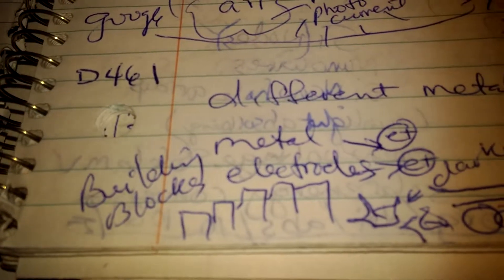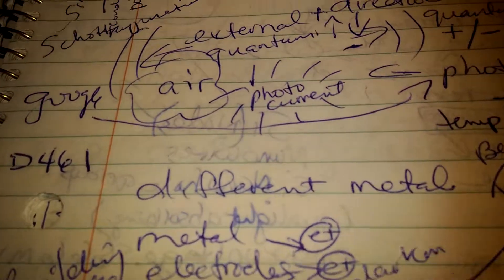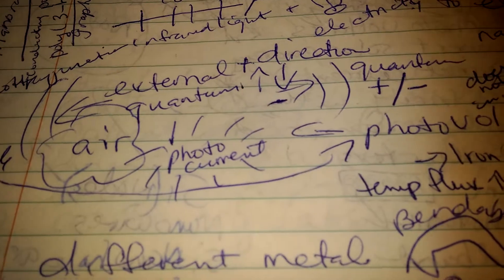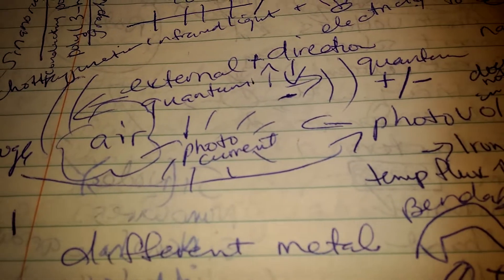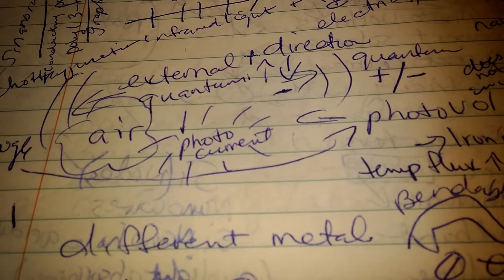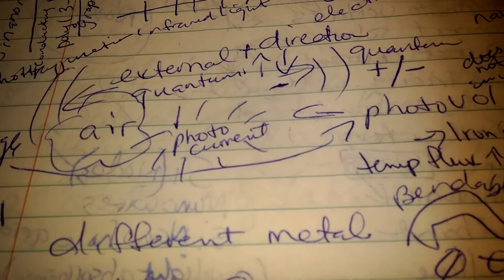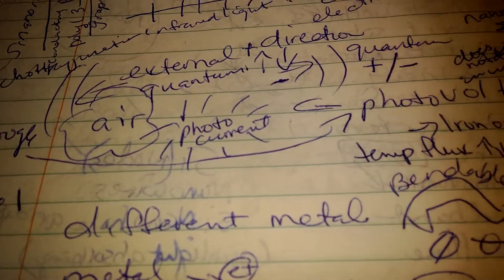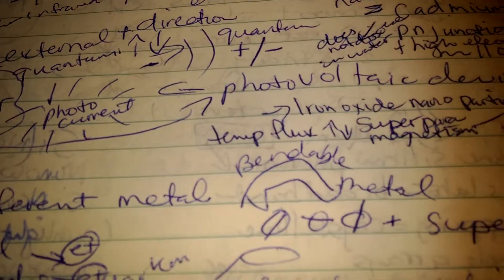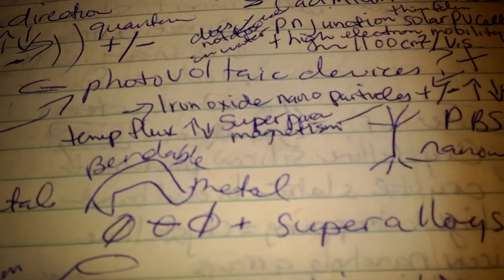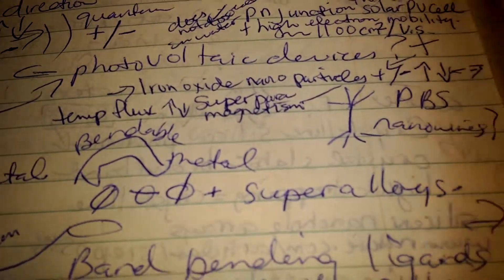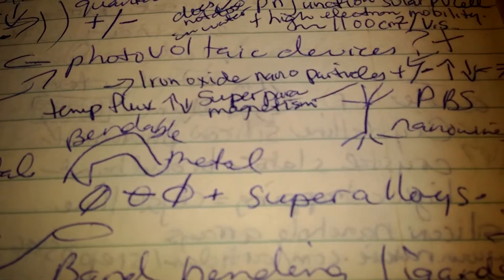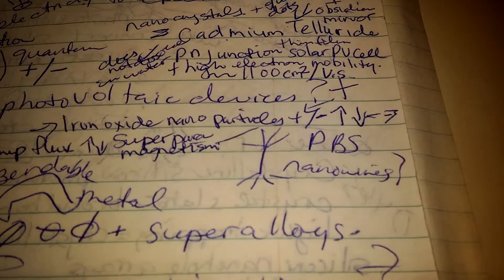Diagram 461 shows the external direction of quantum, goes up and down — positive for up and negative for down. It shows the air and the photocurrent. Photovoltaic devices are positive, iron oxide nanoparticles.